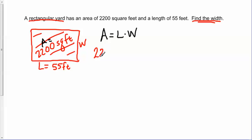We have 2,200 equals the length, which we know is 55. So just putting those pieces of information in. And then they're telling us that we're going to be looking for the width. So that's the w part.